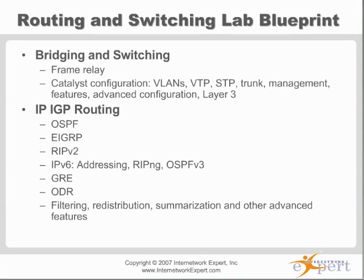On the bridging and switching section and catalyst configuration, the core topics are what matter. Non-core topics include spanning tree, advanced MSTP, MST, advanced MAC address filtering, DHCP snooping, and multicast VLAN registration (MVR). MVR is a neat feature that lets you bleed multicast between VLANs without going through a Layer 3 interface — for example, taking multicast from VLAN 100 and putting it in VLAN 200.